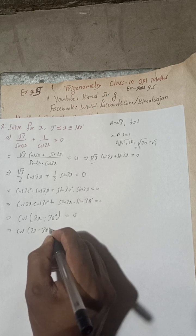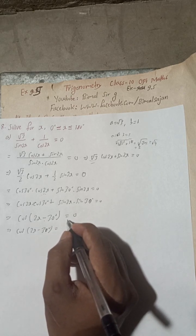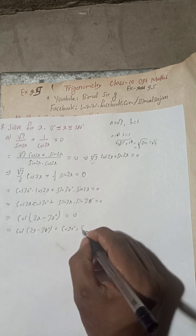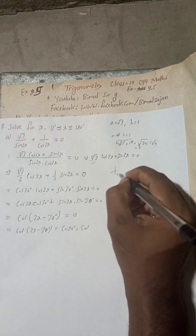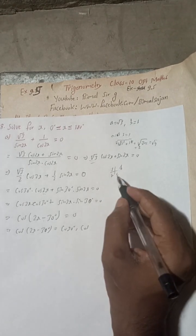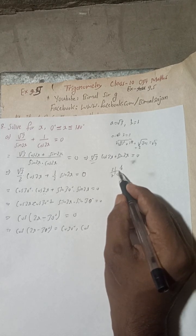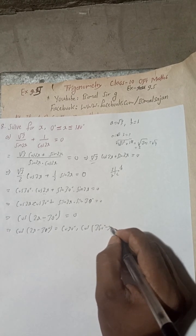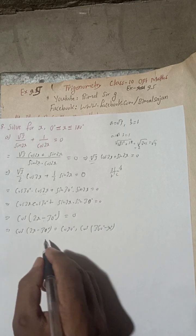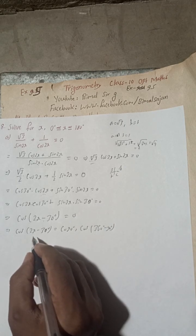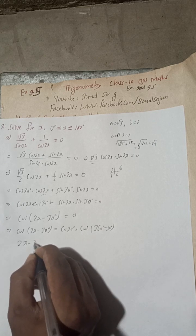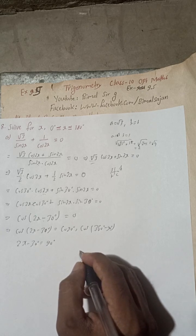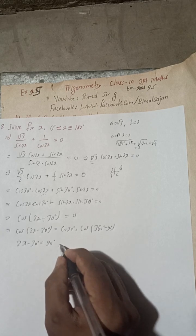This equals zero at cos 90 degrees. Using the CAST rule — C, A, S, T — cosine is also positive in the fourth quadrant, so the other solution is 360 minus 90 equals 270 degrees. Therefore, 2x minus 30 degrees equals 90 degrees or 270 degrees.